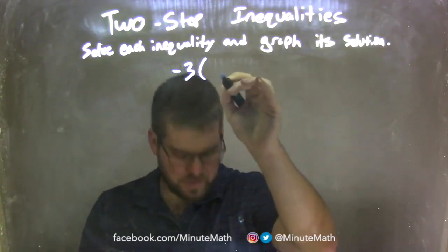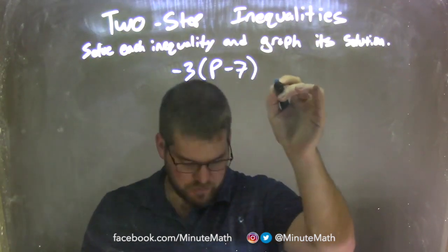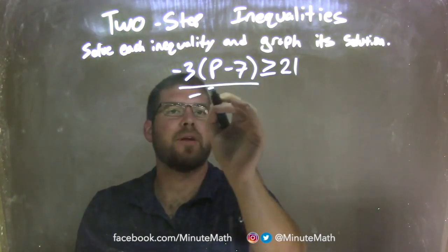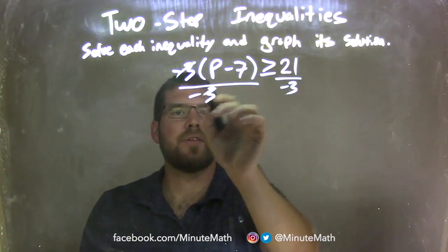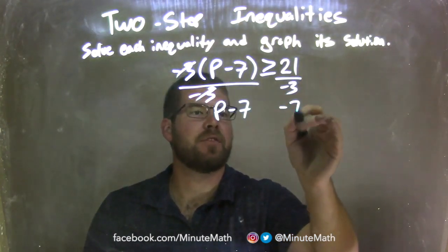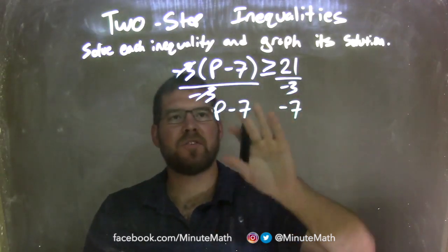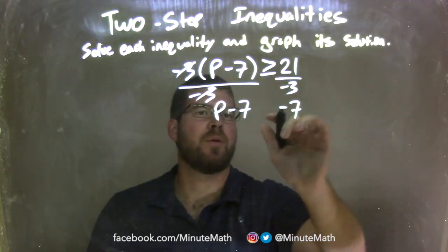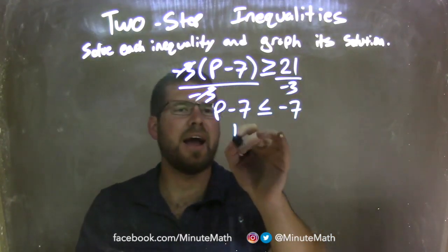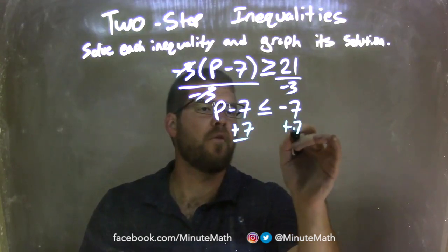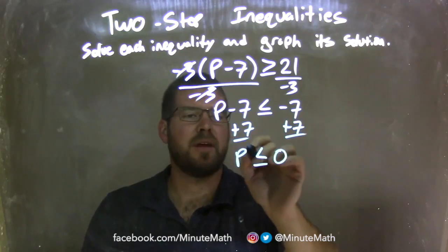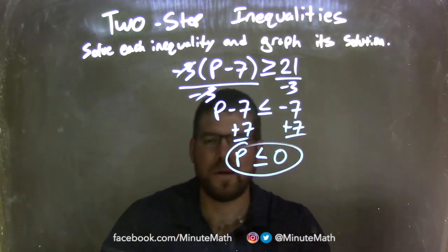Negative 3 times (P minus 7) is greater than or equal to 21. First step: divide both sides by negative 3. That eliminates negative 3, giving me P minus 7 on the left, and 21 divided by negative 3 is negative 7. My inequality flips because I divided by a negative, so it goes from greater than or equal to, to less than or equal to. Now I add 7 to both sides: P is less than or equal to negative 7 plus 7, which is 0. P is isolated.